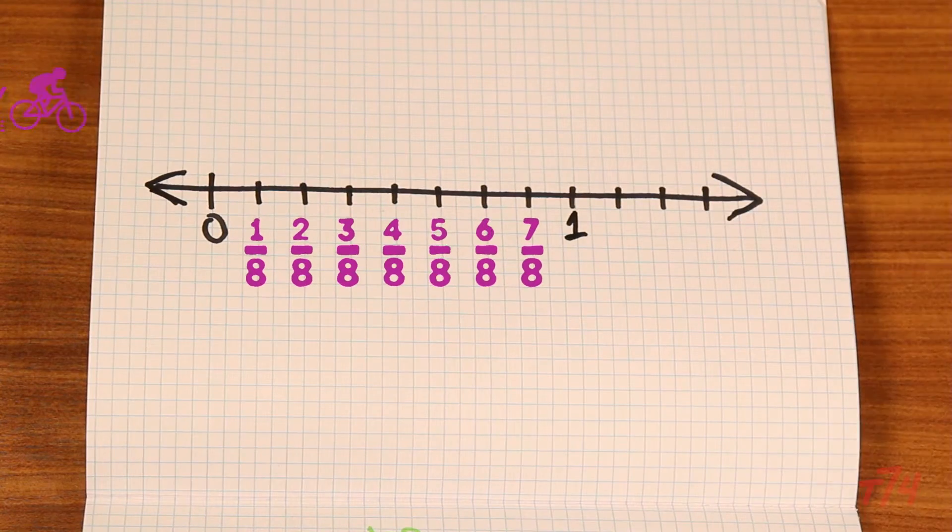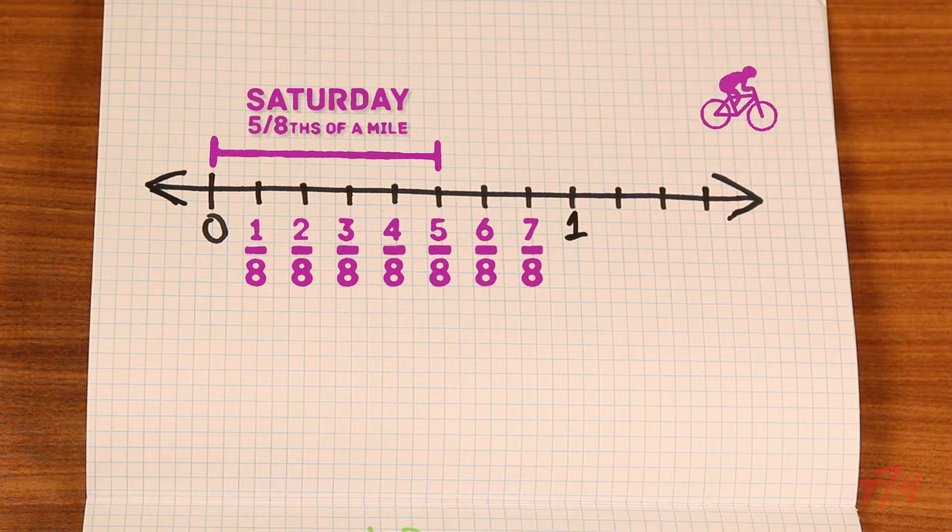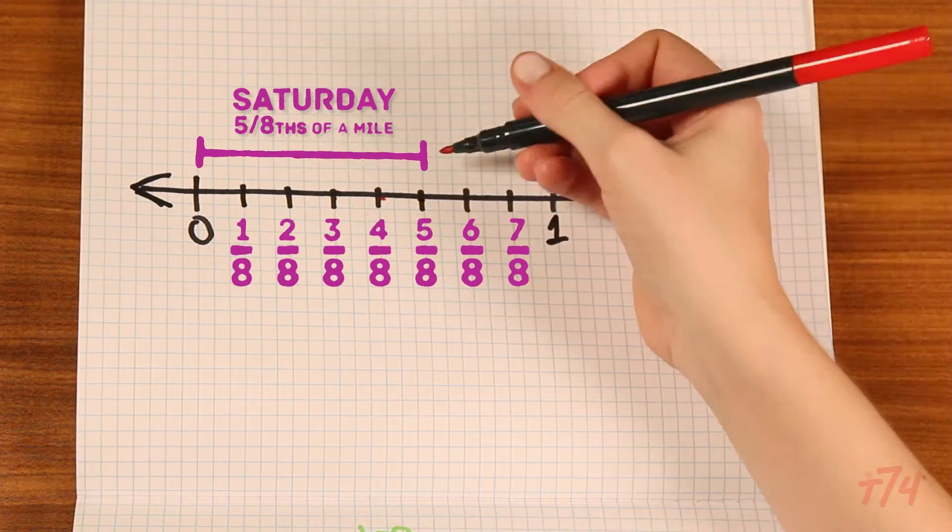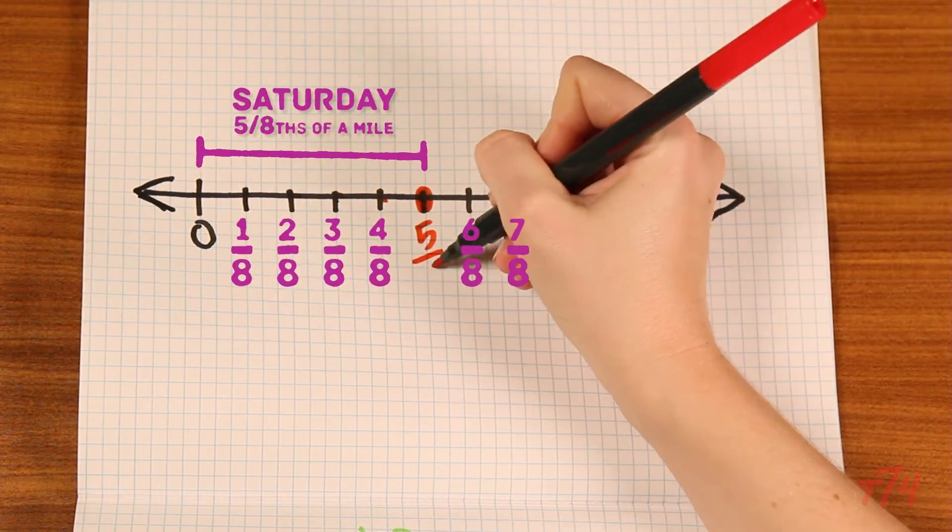Remember Craig rode his bike 5/8 of a mile on Saturday? Then we know that all I needed to do is count my five equal parts.